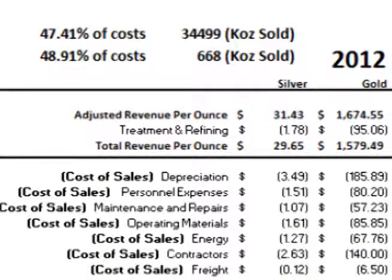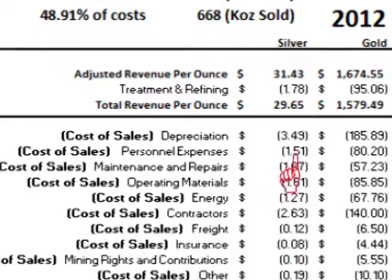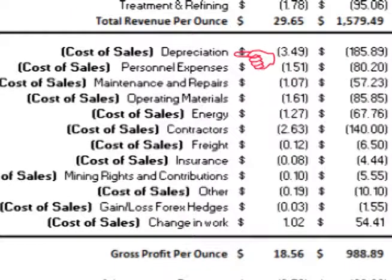In 2012, Fresnillo's cost per ounce to produce silver breaks down the following way. The adjusted revenue before treatment and refining costs was $31.43 per ounce. Treatment and refining costs were $1.78 per ounce, for a total revenue per ounce of silver after treatment and refining costs of $29.65 per ounce.